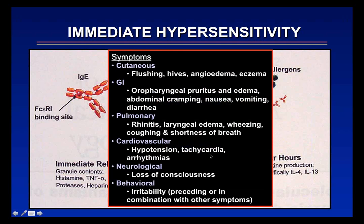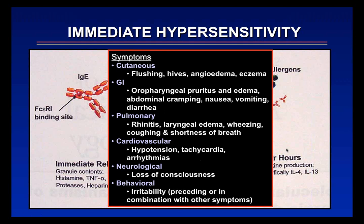The symptoms resulting from mast cell activation include skin flushing, hives, deep tissue swelling, or eczema; oropharyngeal itching and swelling; abdominal cramping, nausea, vomiting, diarrhea; sneezing; throat swelling; wheezing, coughing, shortness of breath; and in severe cases, hypotension. You can lose up to 50% of your intravascular volume over the first 10 minutes of an anaphylactic reaction, so some reactions progress rapidly. Neurological symptoms include loss of consciousness, particularly with hypotension, and irritability because patients are uncomfortable.